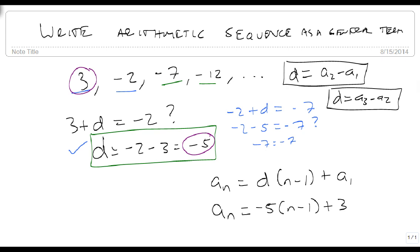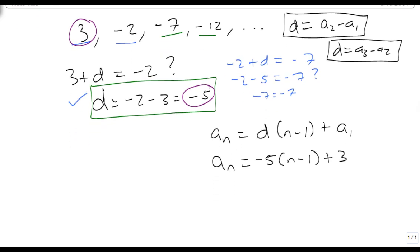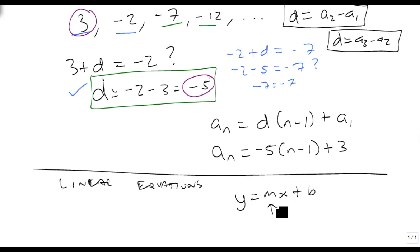And I want to make this real clear. This works very similar to linear equations in two variables. Where our output is equal to our an, m times x plus b. m is very similar to d. In fact it's the same as d.